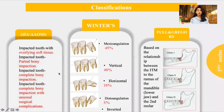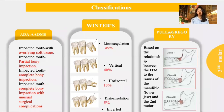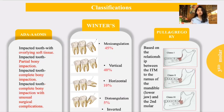There is another classification from the American Dental Association, which classifies the impacted tooth according to the overlying soft tissue and bone. We have an impacted tooth with an overlying soft tissue, an impacted tooth with partial bony impaction, complete bony impaction, and complete bony impaction with unusual surgical complications.